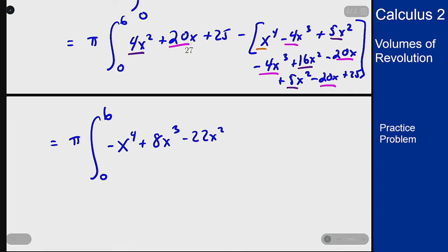Those are all being added together. So plus 60x, and then nothing on the constants because the 25 minus 25 will cancel.